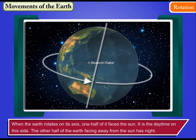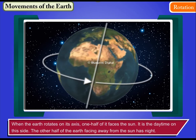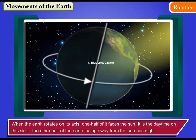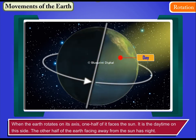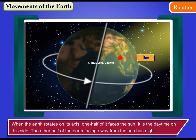When the Earth rotates on its axis, one half of it faces the Sun. It is the daytime on this side. The other half of the Earth facing away from the Sun has night.